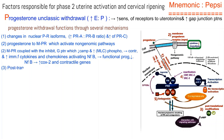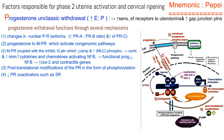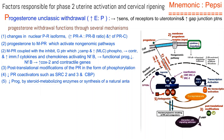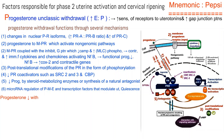Further progesterone withdrawal mechanisms: (4) post-translational modifications of progesterone receptor via phosphorylation; (5) decreased expression of progesterone receptor coactivators such as steroid receptor coactivators 2 and 3, and CREB-binding protein (CBP); (6) local inactivation of progesterone by steroid-metabolizing enzymes or synthesis of a natural antagonist; (7) micro-RNA regulation of progesterone-metabolizing enzymes and transcription factors that modulate uterine quiescence. Together with increased cyclooxygenase-2 and contractile gene expression, this results in increased myometrial contractions vital for initiation of labor.